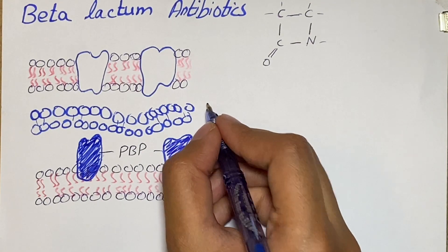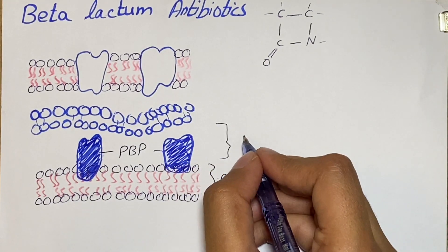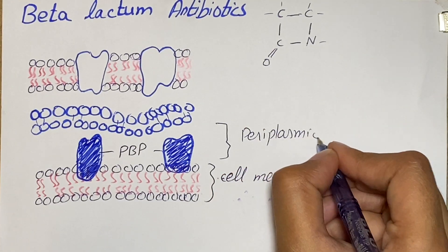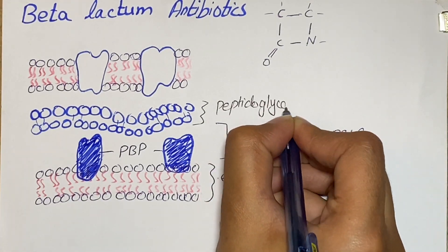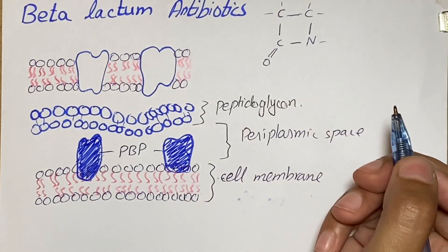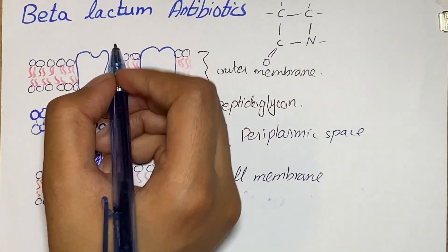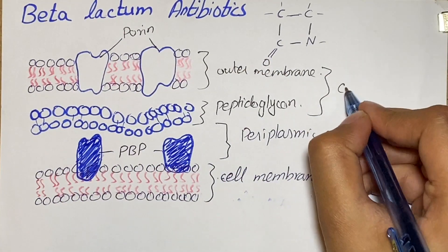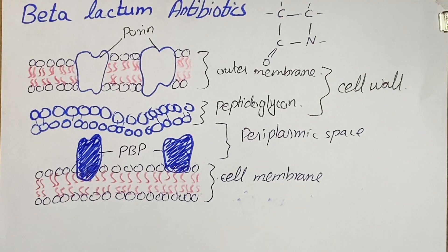Outside the cell membrane there is presence of the periplasmic space, which contains these proteins. This space is not present in gram-positive bacteria — over there there is only periplasm. The cell wall actually consists of the outer membrane along with peptidoglycan chains. Both of these together form the cell wall, and the structures present in the outer membrane are called porins, which are responsible for the penetration of beta-lactam antibiotics.